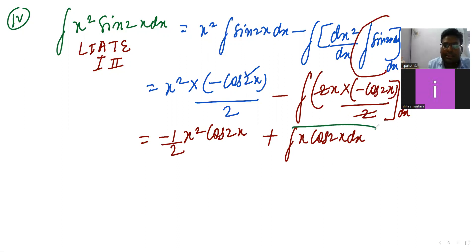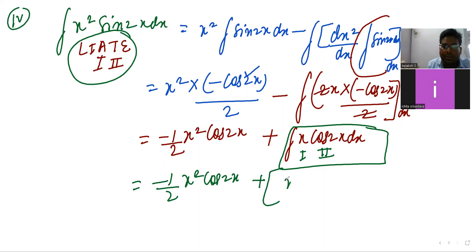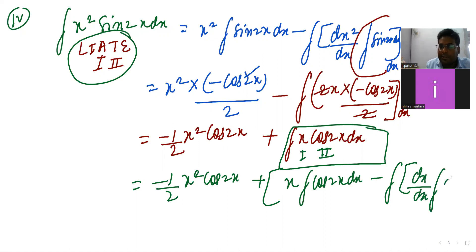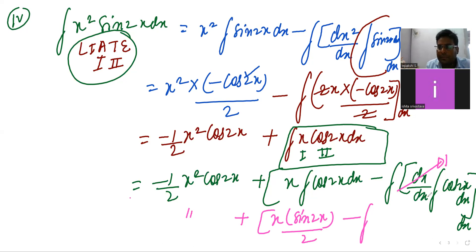Now we have to apply integration by parts again to the second part. So it will be minus (1/2)·x²·cos(2x), minus: again x is first and cos(2x) is second. Take x outside: x times integration of cos(2x) dx, minus integration of differentiation of x by dx times integration of cos(2x) dx, whole dx. Carry forward: this gives x·sin(2x)/2, minus 1 times integration of sin(2x)/2 dx — integrate again.